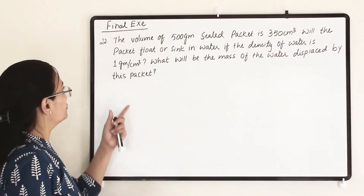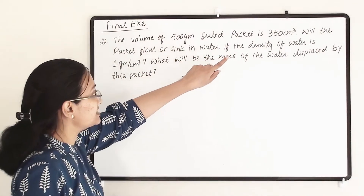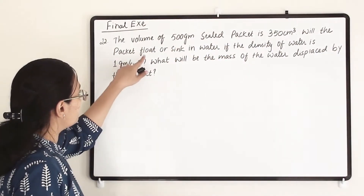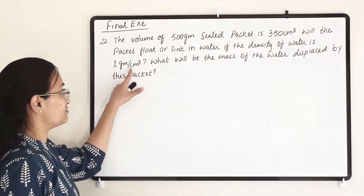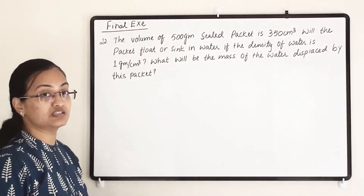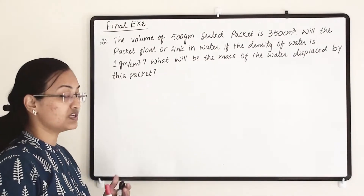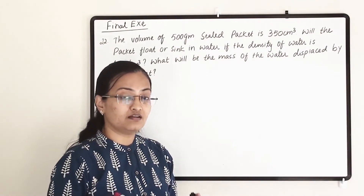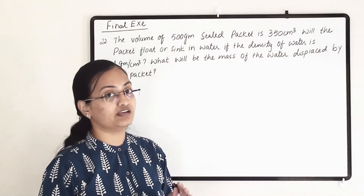Question number 22. The volume of a 500 gram sealed packet is 350 centimeter cube. Will the packet float or sink in water if the density of water is 1 gram per centimeter cube? We have to compare the densities — if the packet's density is more compared to water it will sink, and if lesser it will float.